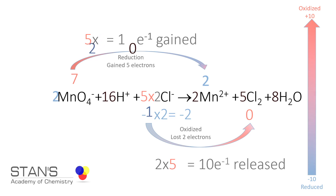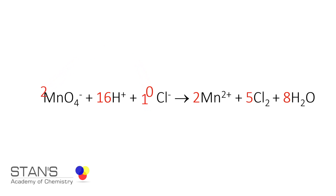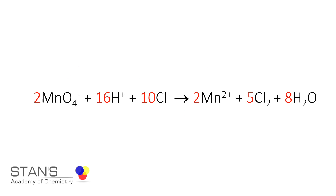The fully balanced equation is: 2MnO₄⁻ + 16H⁺ + 10Cl⁻ → 2Mn²⁺ + 5Cl₂ + 8H₂O. This equation is now completely balanced using the oxidation number method, and that's how we balance a reaction using this method.